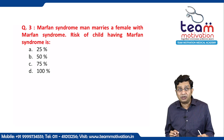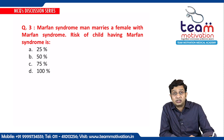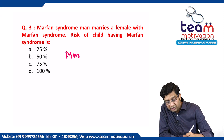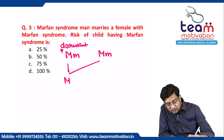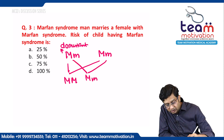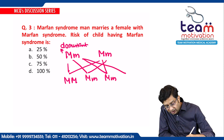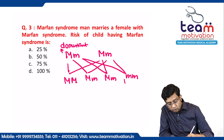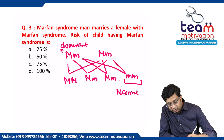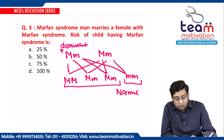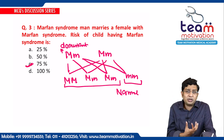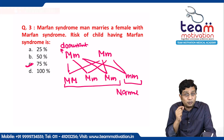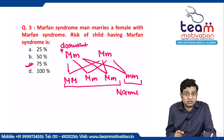Marfan syndrome: a man with Marfan syndrome marries a female with Marfan syndrome — what is the risk of the child having Marfan syndrome? Capital M is the dominant gene. When you do the cross, only one child will be normal (mm) and three children will have the disease (MM, Mm, Mm). So the risk of the child having Marfan syndrome is 75%. Simple MCQs — the more you practice, the better you get at solving them.